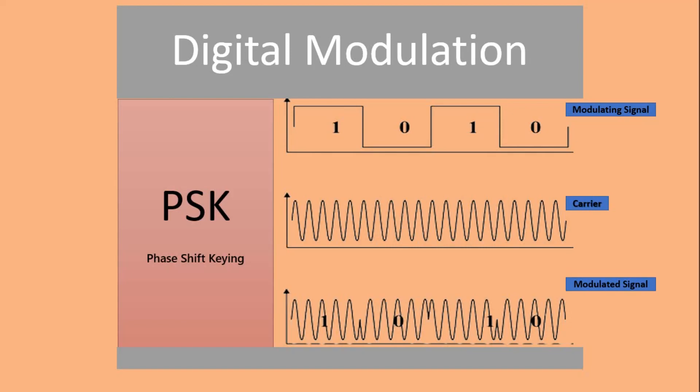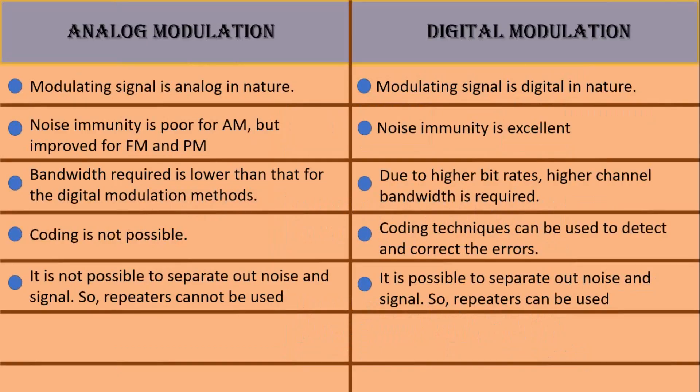Now let us quickly run through some differences between analog modulation and digital modulation. First, in analog modulation the modulating signal is analog in nature, while in digital modulation it is digital in nature. Second, noise immunity is poor in analog modulation but excellent in digital modulation. Third, the bandwidth requirement for analog modulation is lower than for digital modulation, since higher bit rates require higher channel bandwidth.